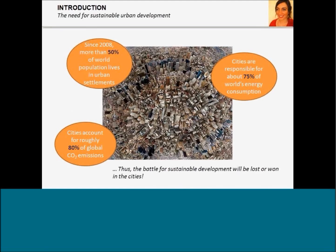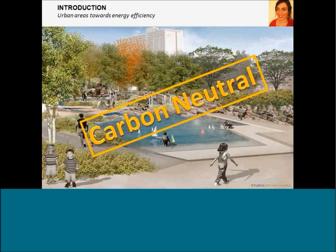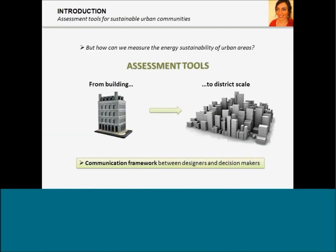As it has already been stated, you all know that we live in an urban world. And since 2008, more than half of the world's population live in urban settlements, which has a great impact on energy consumption and CO2 emissions of cities. It is not too much to say that the battle for sustainable development will be lost or won in the cities. Recognizing this fact, more and more urban communities embark on the journey to drastically reduce their CO2 emissions and become carbon neutral. How can we monitor the progress of these urban areas and measure the level of energy sustainability they have achieved?